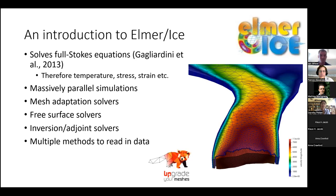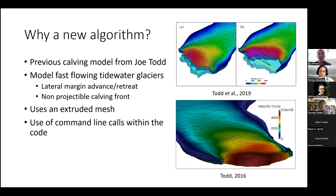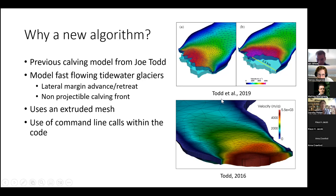Why do we need a new calving algorithm in Elmer? There was previously a calving model developed by Joe Todd, but it had two key limitations. First, the lateral corners were fixed in place, so if the glacier advances or retreats, the front moves like a bowstring. If you get a large retreat or advance, the model would break down because it's really hard to remesh those edges. It also relied on the calving front always remaining projectable — you couldn't have two nodes behind each other with the same X coordinate. It also relied on an extruded mesh and command line calls for remeshing, which obviously isn't ideal.